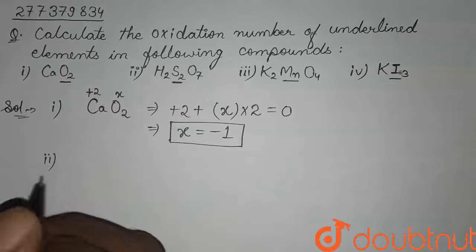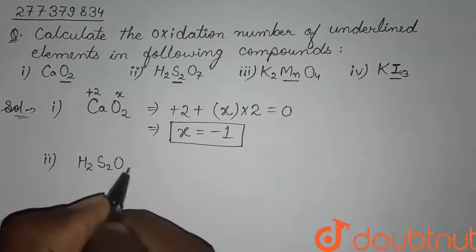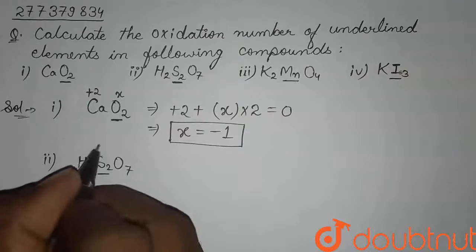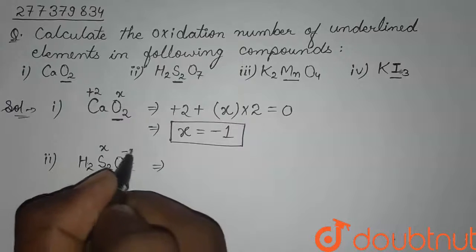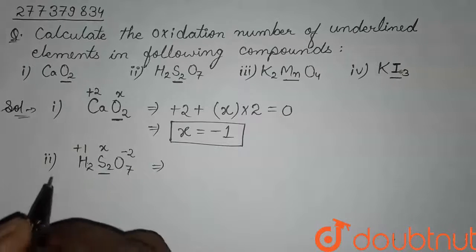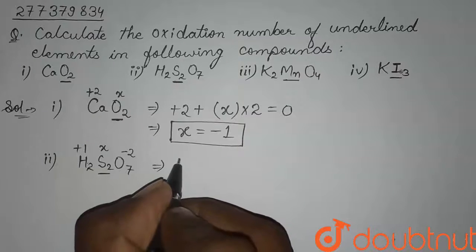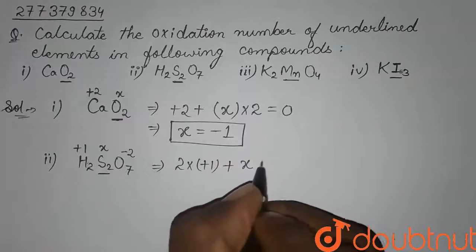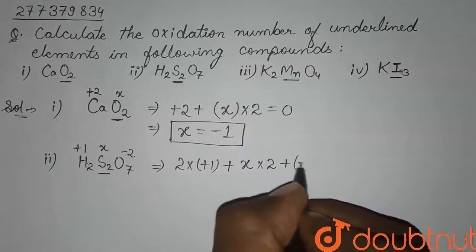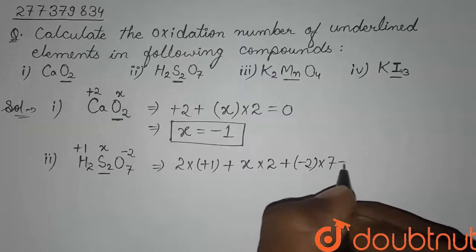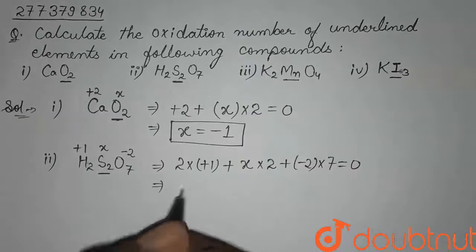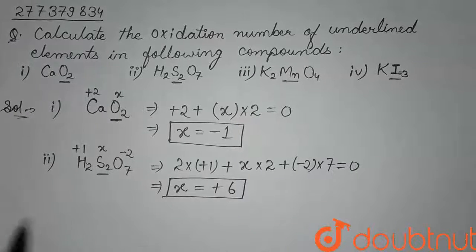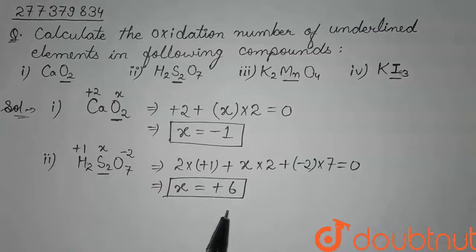Now in the second compound, we have to find the oxidation state of sulfur. Therefore: 2 × (+1) plus X (oxidation state of sulfur) × 2 sulfur atoms, plus (-2) oxidation state of oxygen × 7 oxygen atoms = 0 (overall charge). On calculating this, we get X = +6. So the oxidation state of sulfur in H2SO7 is +6.